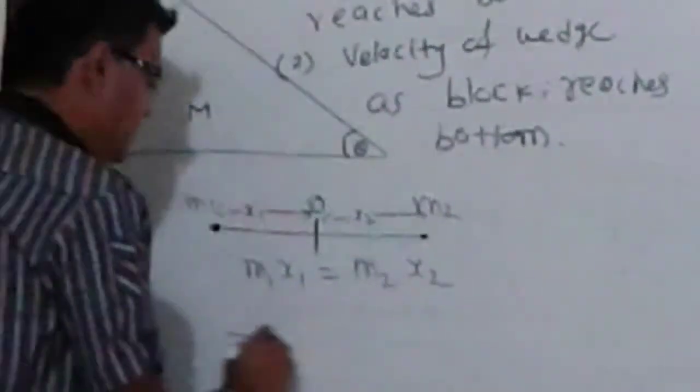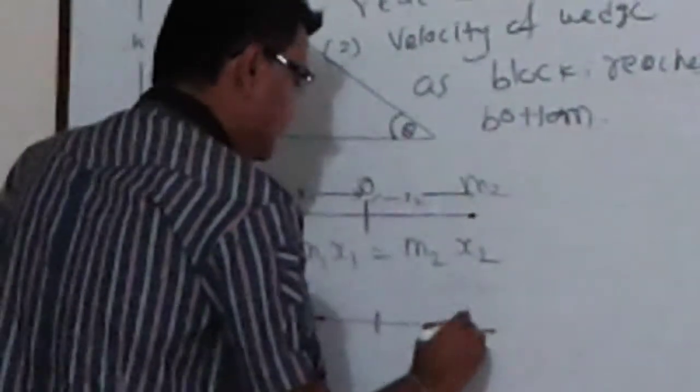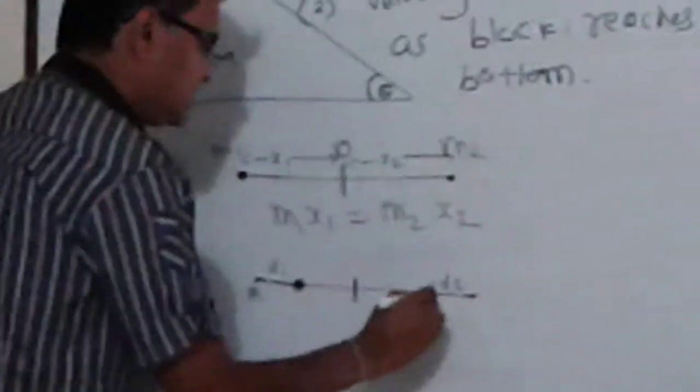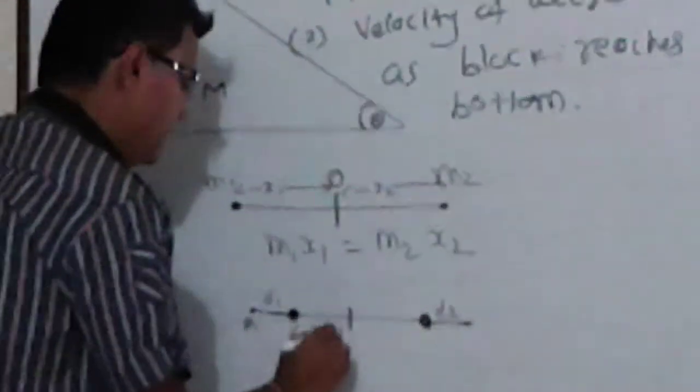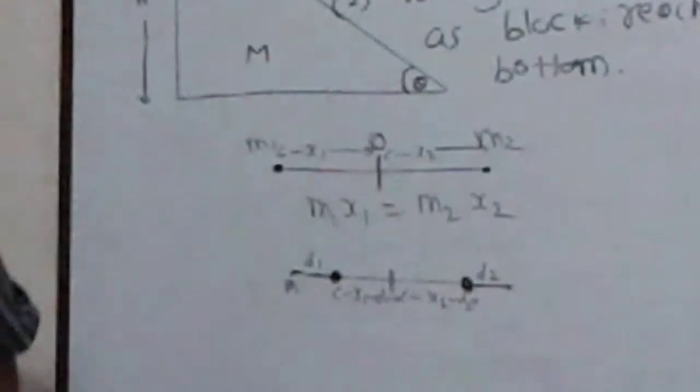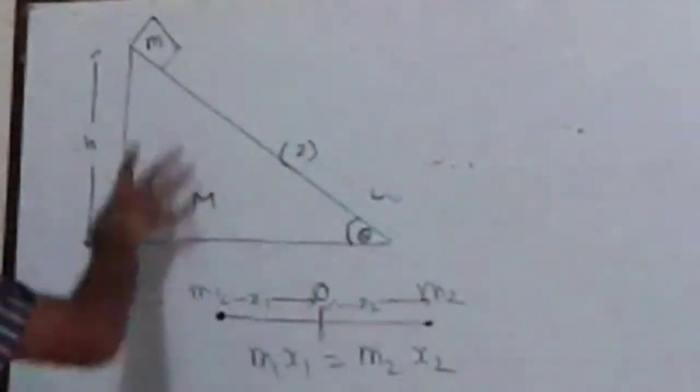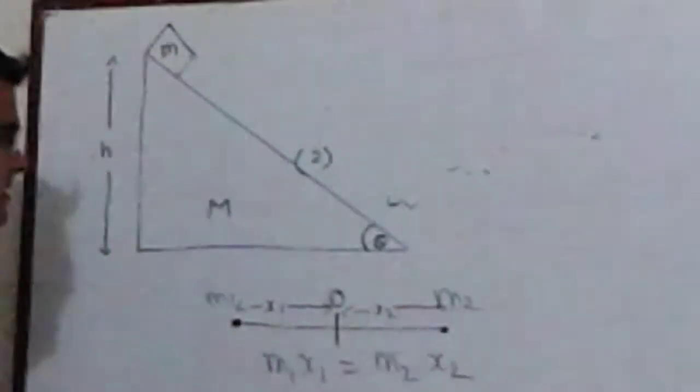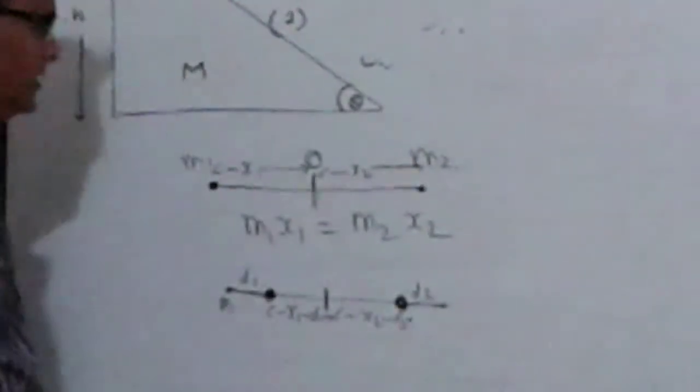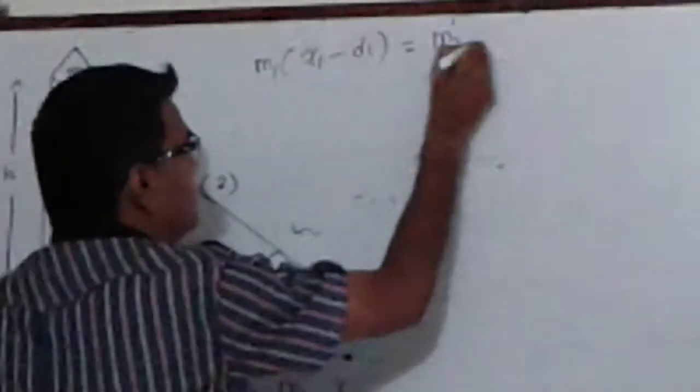Now let us consider a new situation in which the point block M1 moves to a distance D1 and M2 moves to a distance D2. These are their new positions. This distance will be x1 minus D1 and this distance will be x2 minus D2. As there is no external force acting on this system, the center of mass must again remain at O. If you consider the new situation, you will have M1*(x1 - D1) equal to M2*(x2 - D2).